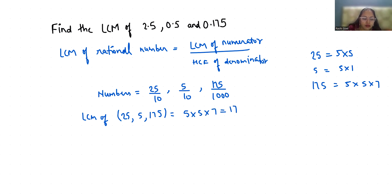Now HCF of 10, 10 and 1000. 10 is 2 times 5. 1000 is 10 times 10 times 10. Or in prime factorization, 2 times 5 times 2 times 5 times 2 times 5.